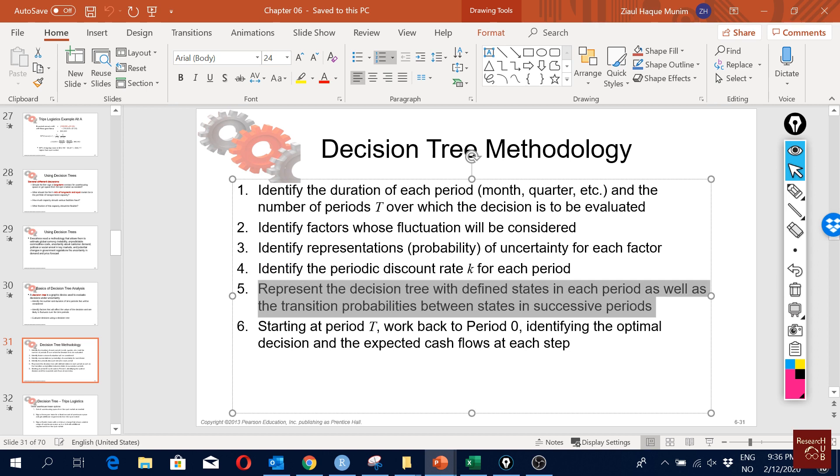Finally, when we make the decision tree, we start from period zero towards the number of periods. But when we will be solving the decision tree, we start with the last period and we work back to the first period, period zero.